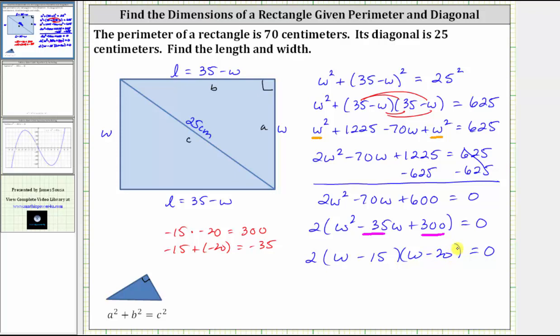And now using the zero product property, if this product is equal to zero, either W minus 15 equals zero, or W minus 20 is equal to zero. Solving for W, we have W equals 15, or W equals 20.